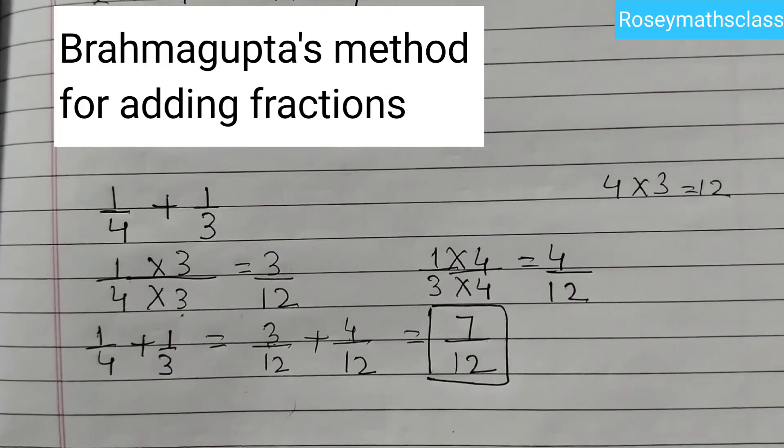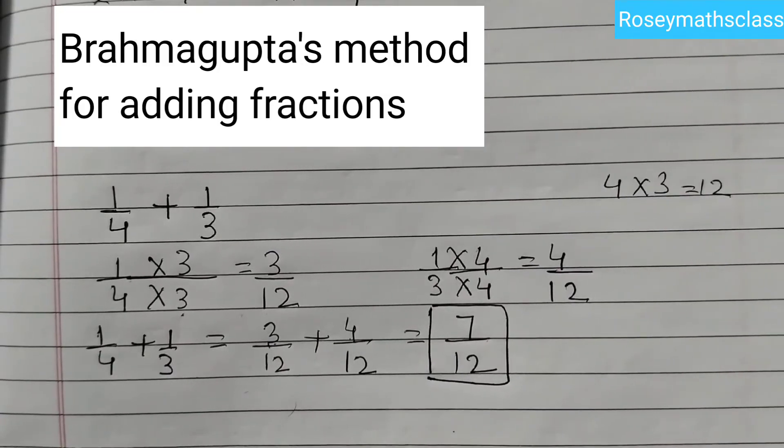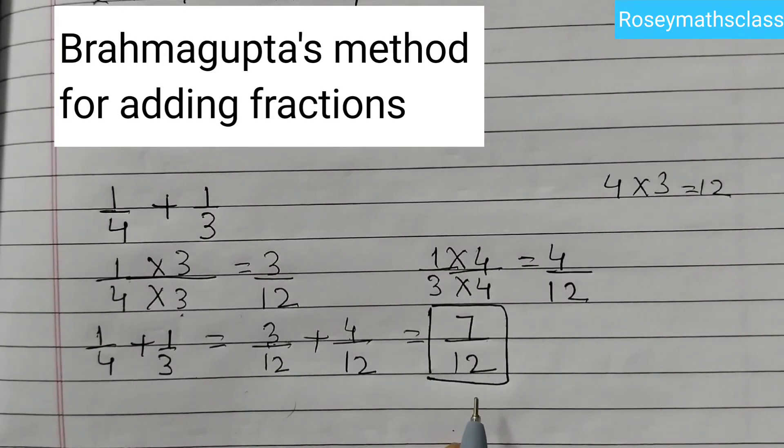So the steps are: find equivalent fractions so that the fractional unit is common for both the fractions, add the numerators only keeping the same denominator, and if you can further simplify this, then express this in lowest form. Let's do the next example.